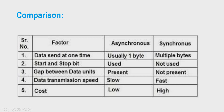Obviously, the cost of asynchronous communication is lower and that of synchronous communication is greater. An example of asynchronous communication is communication between keyboard and computer, whereas an example of synchronous communication is computer-to-computer communication. More redundant bits are required in asynchronous communication, whereas the number of redundant bits in synchronous communication are less, and therefore asynchronous communication is slower as compared to synchronous communication.